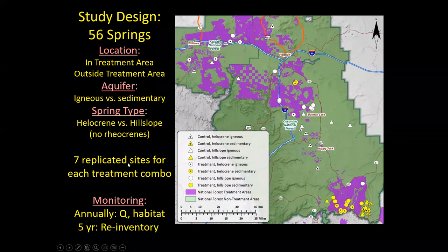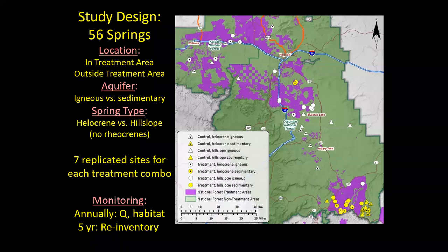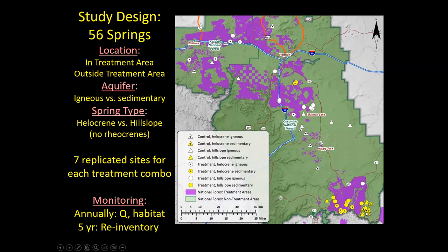So that's our study design: three treatment factors, seven springs for each treatment combination, monitoring annually for habitat and flow, with a five-year bookend inventory of habitat, biota, and spring condition. The springs are scattered across the landscape — most south of Flagstaff, a couple up in the San Francisco Peaks for the igneous aquifers, and most along the Mogollon Rim for the sedimentary aquifers.